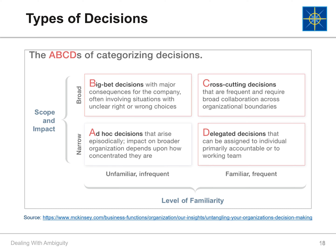To summarize what we have covered so far, the four types of decisions are: ad hoc decisions, which are infrequent and low impact; big bet decisions, which are infrequent and high impact; cross-cutting decisions, which are frequent and high impact; and delegated decisions, which are frequent and low impact.